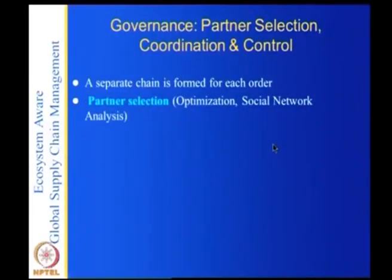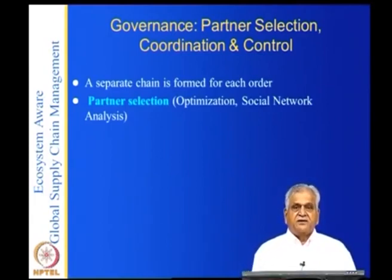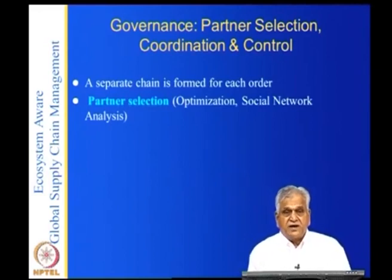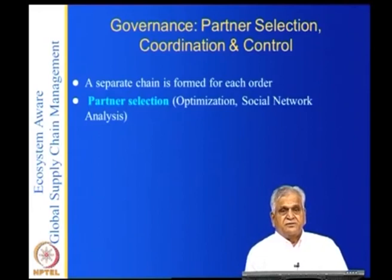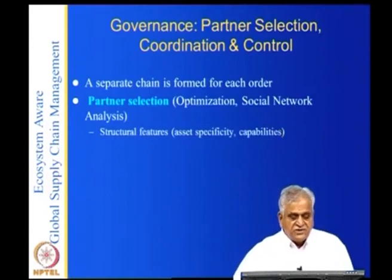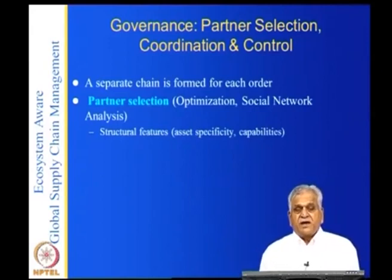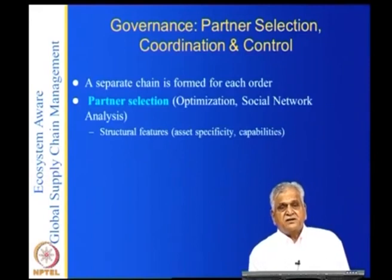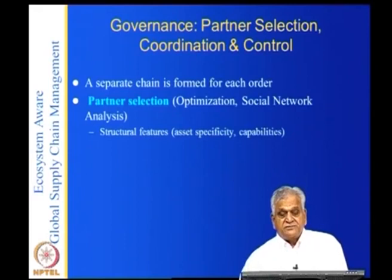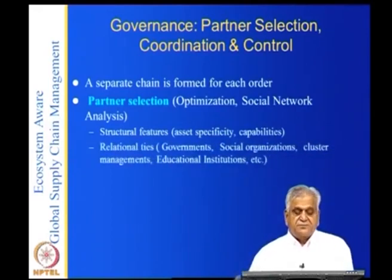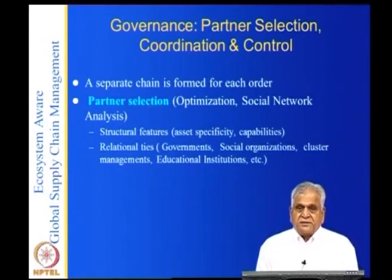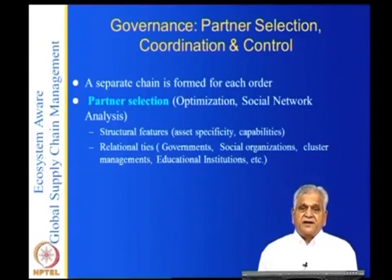How do you do partner selection? From the big list, you have to select partners for a particular order. Do you want to minimize lead time, minimize cost, or maximize quality? Depending on that, you can use social network analysis, optimization, or data analytics to select partners. There are also structural features to remember: your suppliers may have some asset specificity and you may require special capabilities. Your suppliers should have those structural features and relational ties. Your business requires suppliers with government connections, social organizations, cluster management, and education institutions.